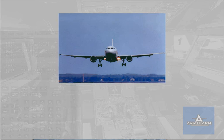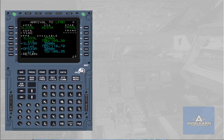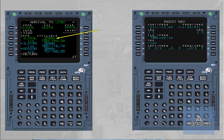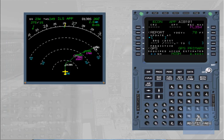Precision approaches can be flown using selected modes or managed modes, where the autopilot flight director provides guidance laterally and vertically. The FMGC provides automatic guidance on the localizer and glide slope, provided that the ILS approach has been selected in the flight plan using the arrival lateral revision, or the ILS frequency and course have been inserted through the radio navigation page. The localizer can be intercepted in heading or in navigation mode.